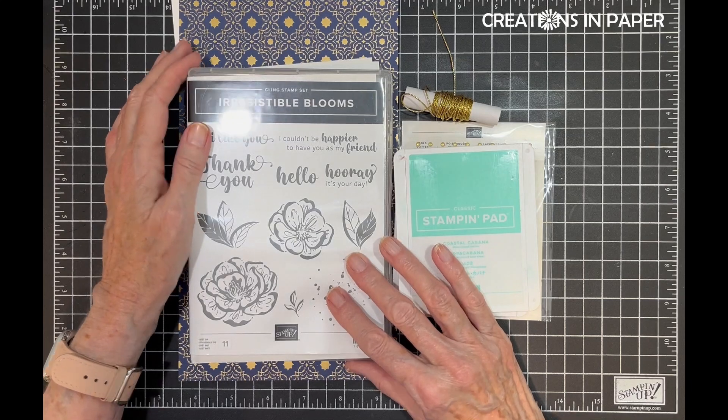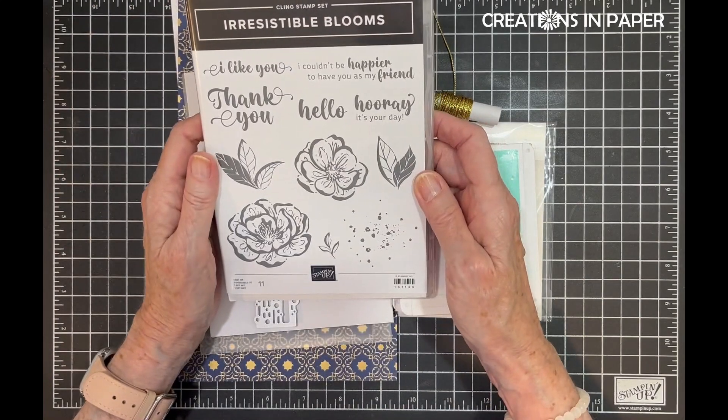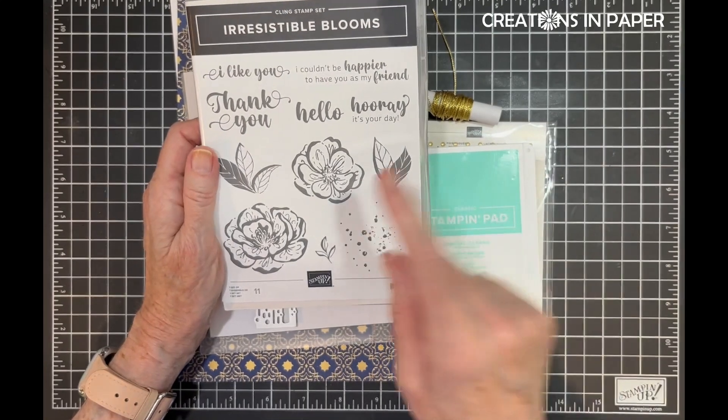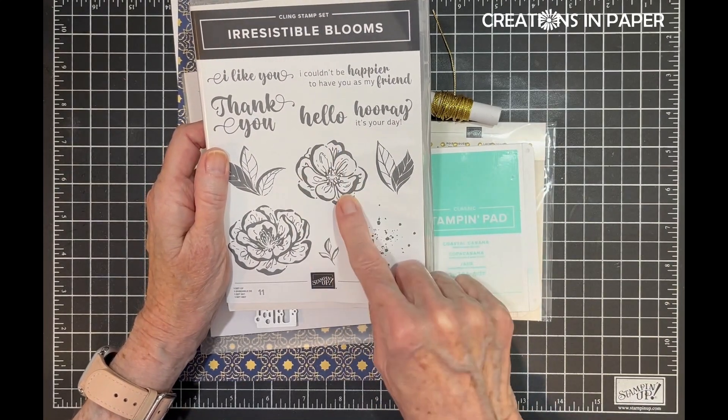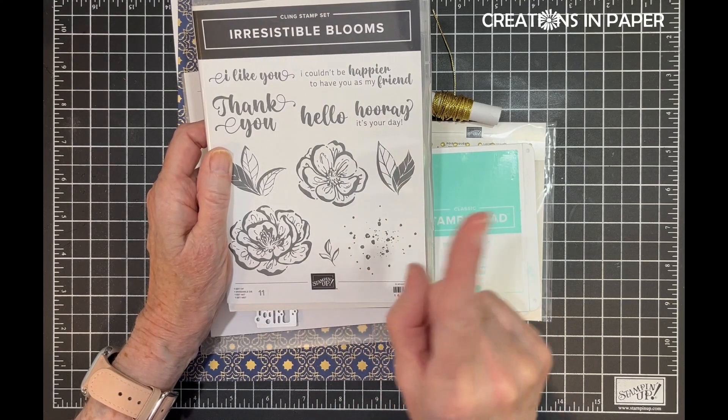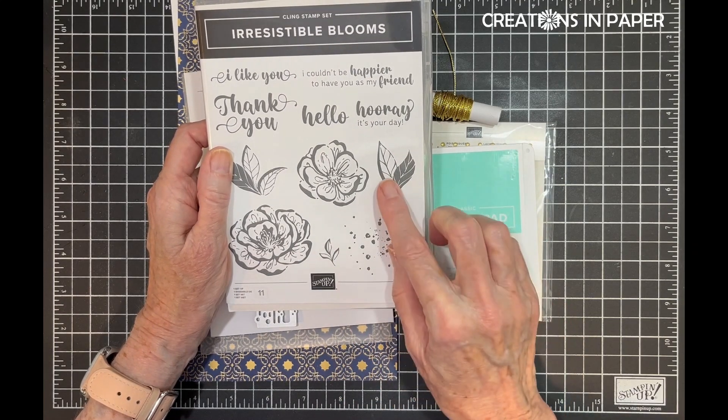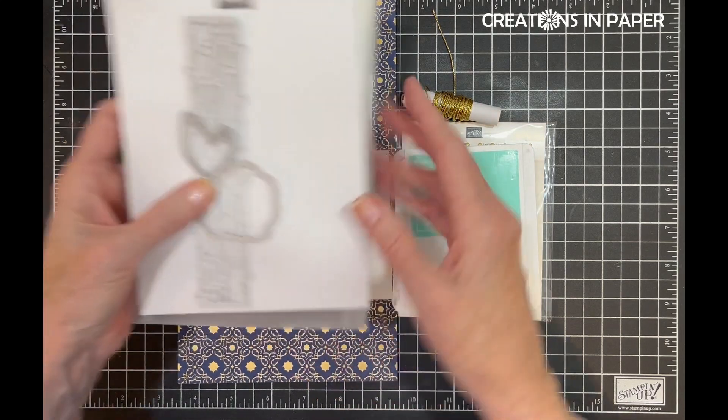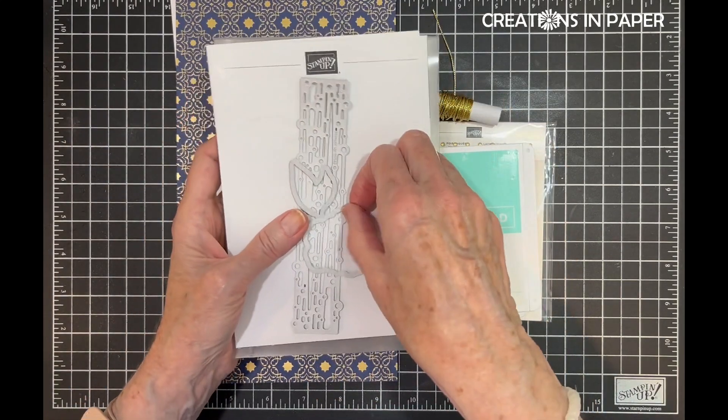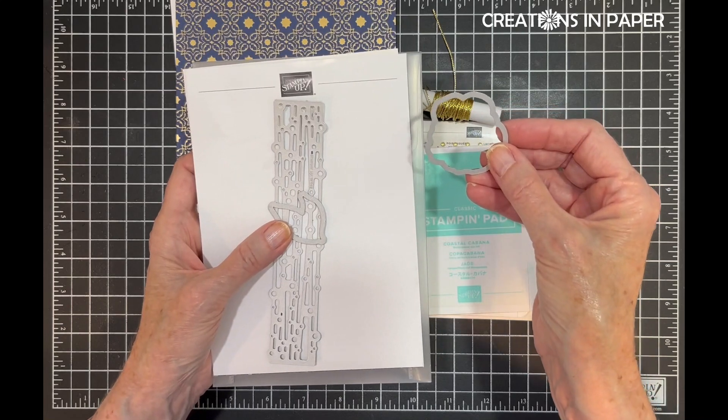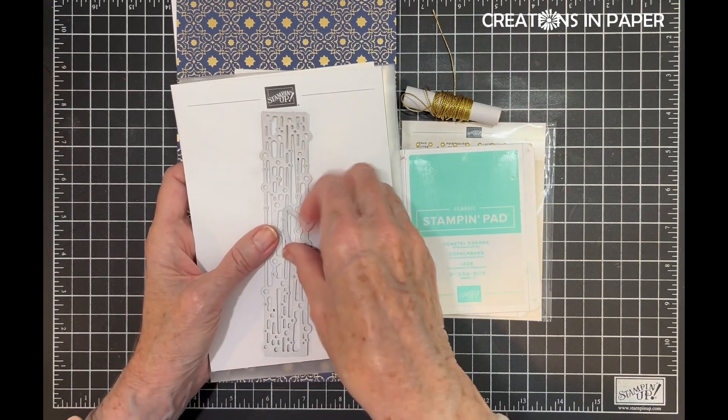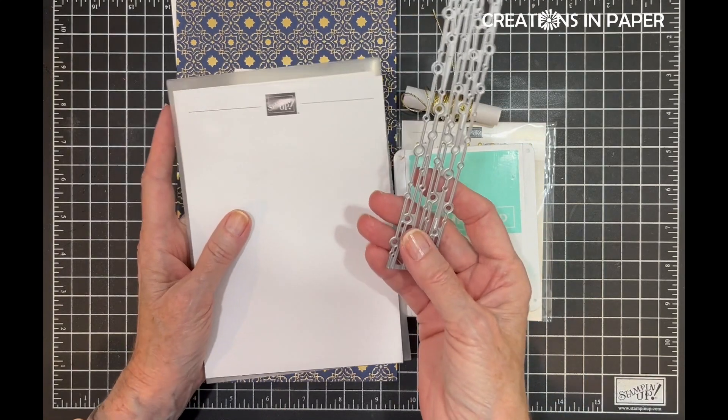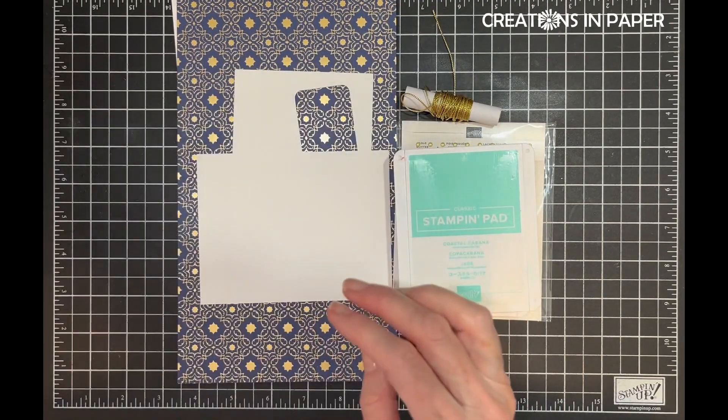What we're going to use today is the Irresistible Blooms Bundle. Now this is going to be going soon, so don't wait too long. I used this image and this image. I didn't do a sentiment, but we'll have to wait and see. From the coordinating dies, I have the die to cut out the bloom, the die to cut out the leaves, and this die which makes a fun element to add to your cards.